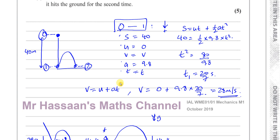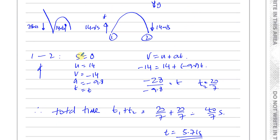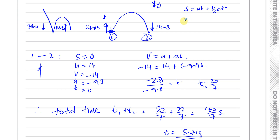I could have also used S = UT + ½AT² for the segment between 1 and 2, because the displacement is 0 — it's the same level. This formula is also useful in situations where you need to find the time to reach a certain height above the starting point, in which case you'd use S as that displacement from its initial position.